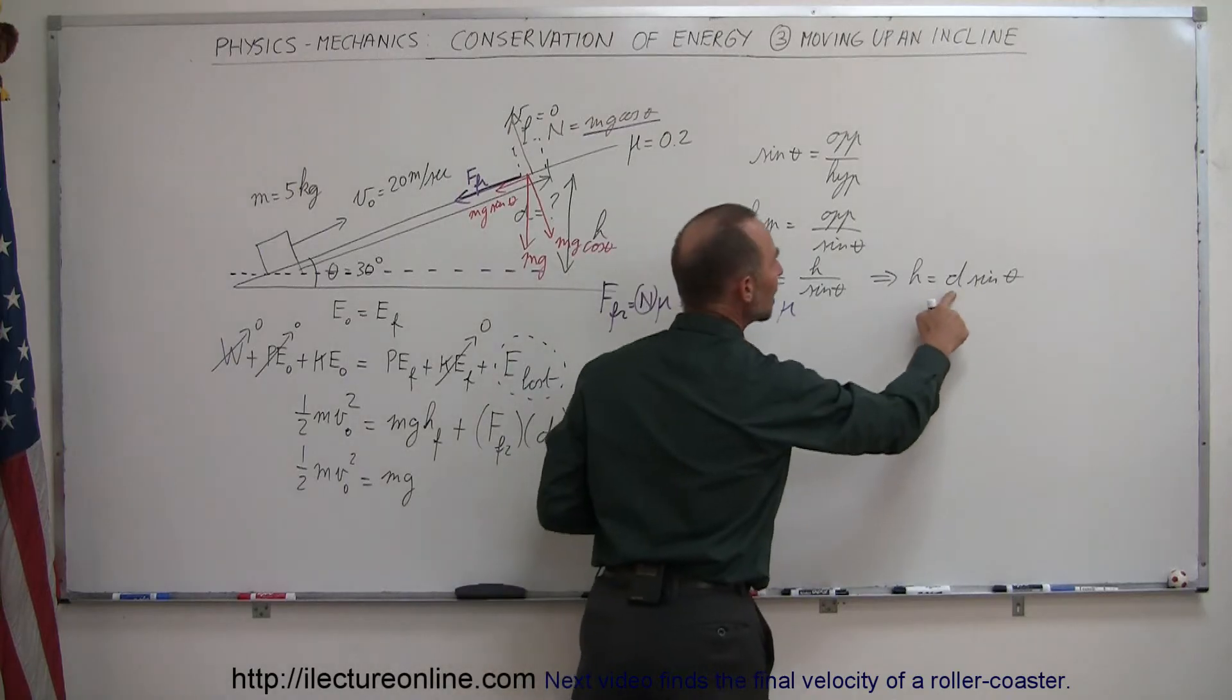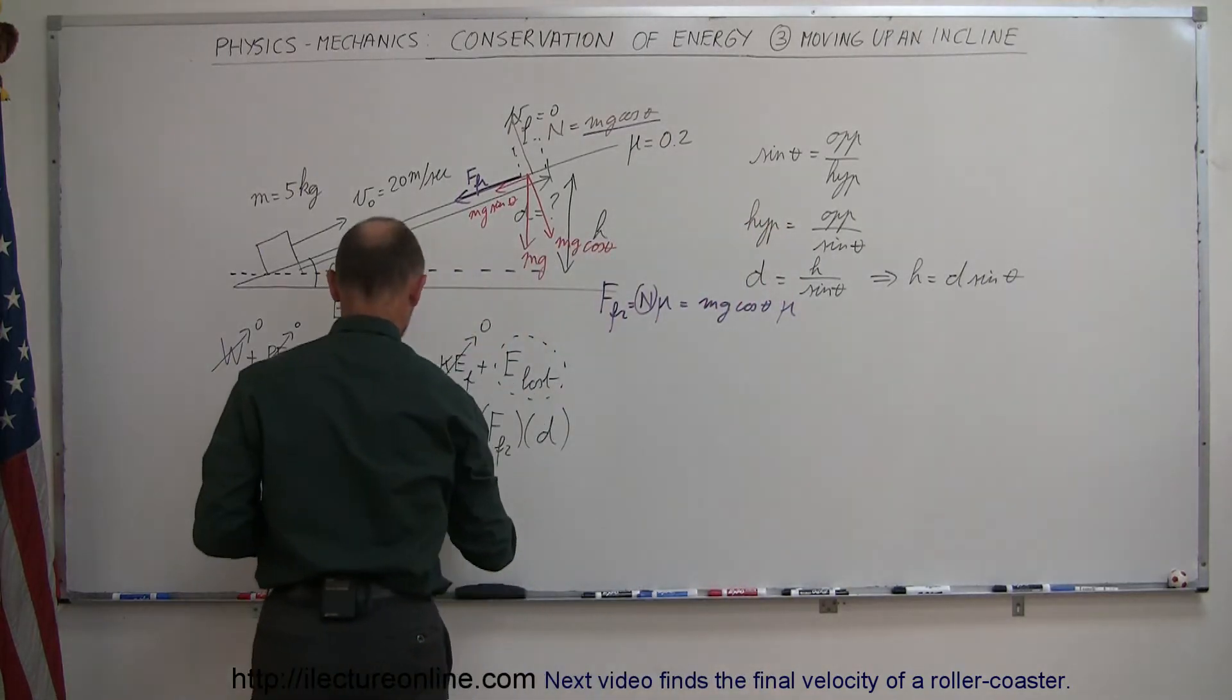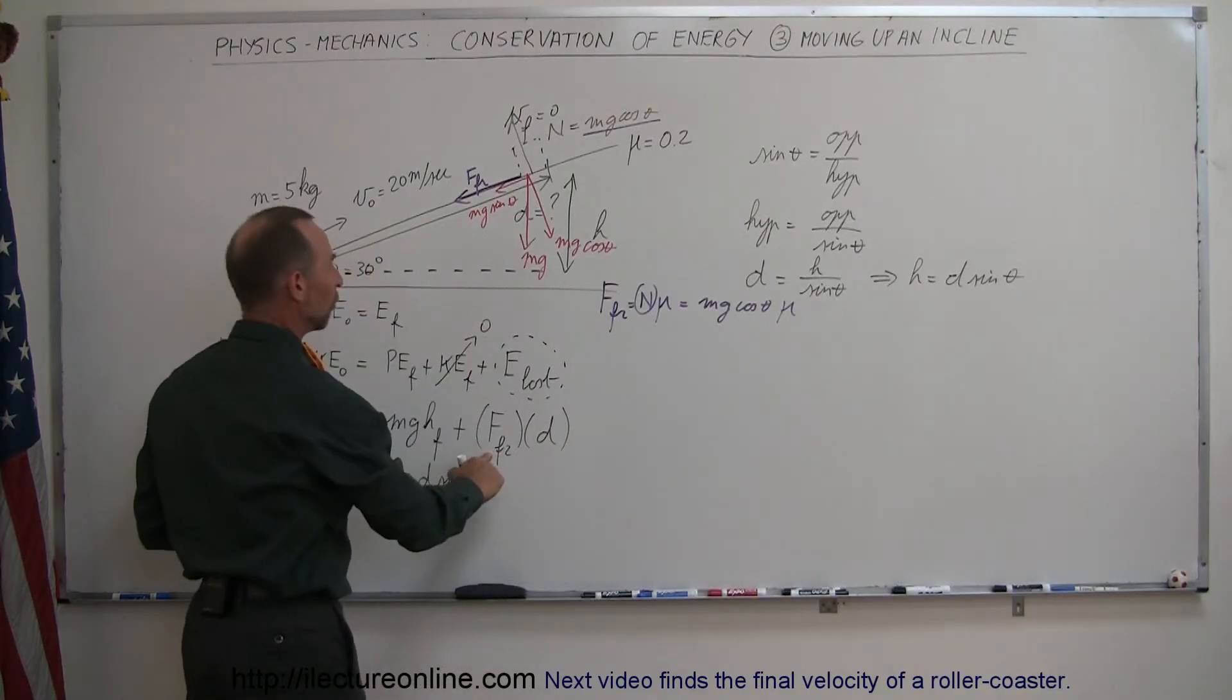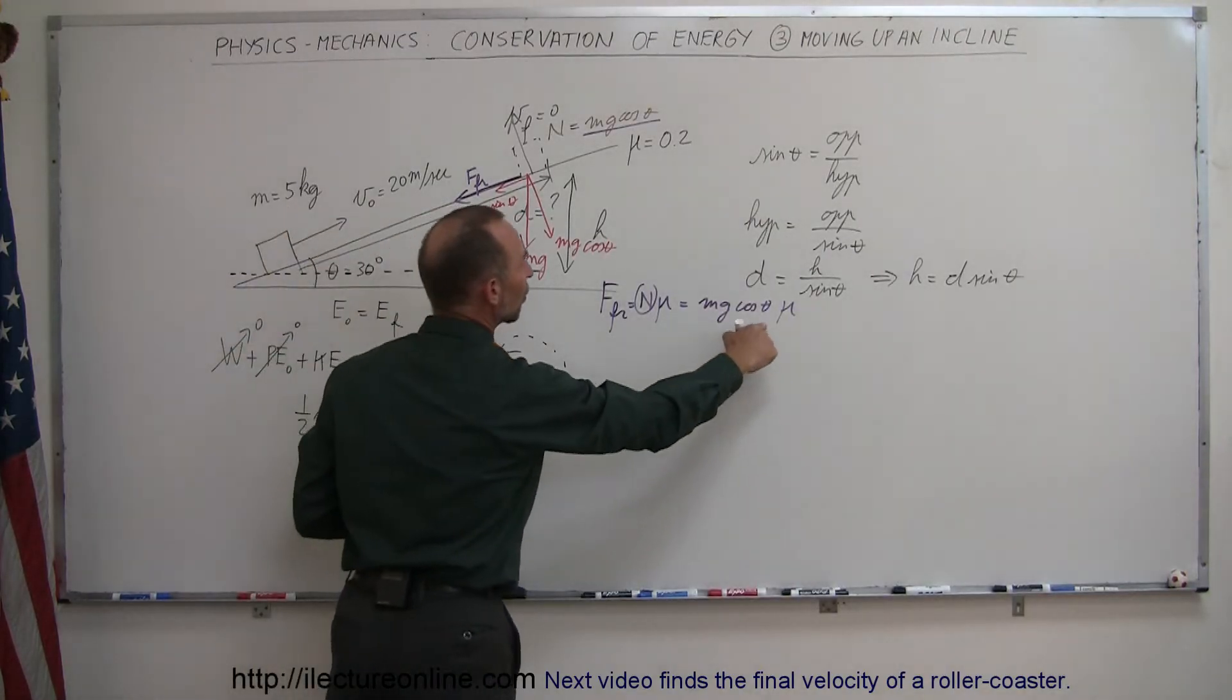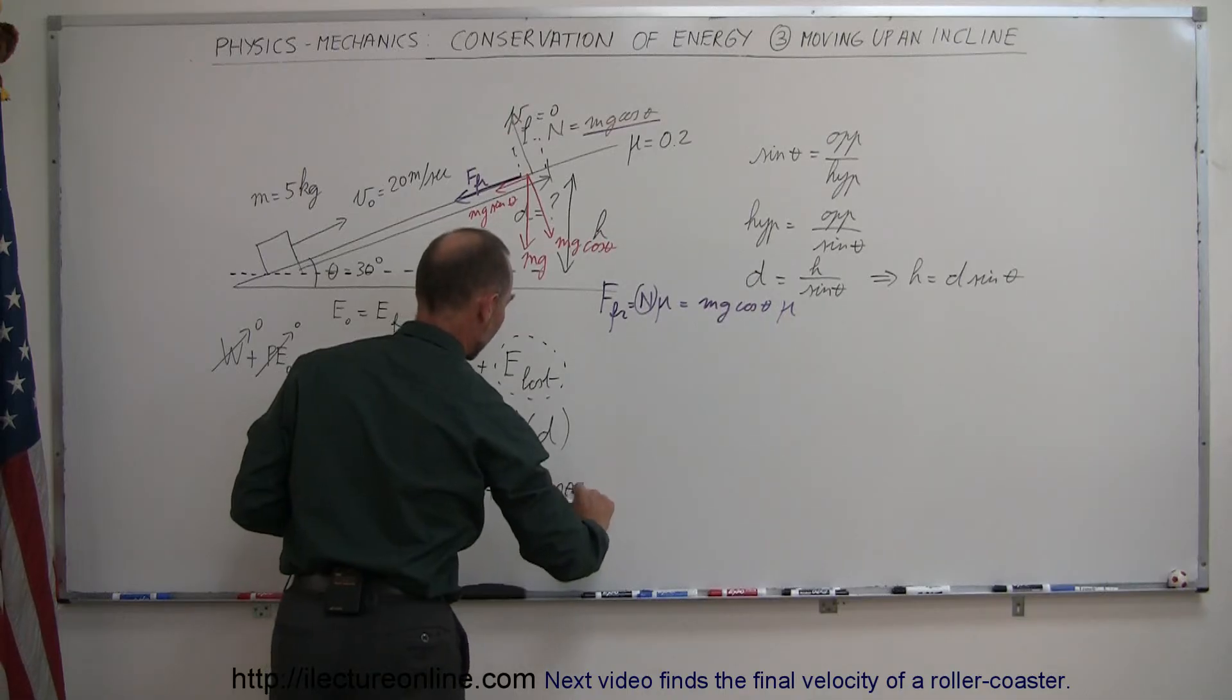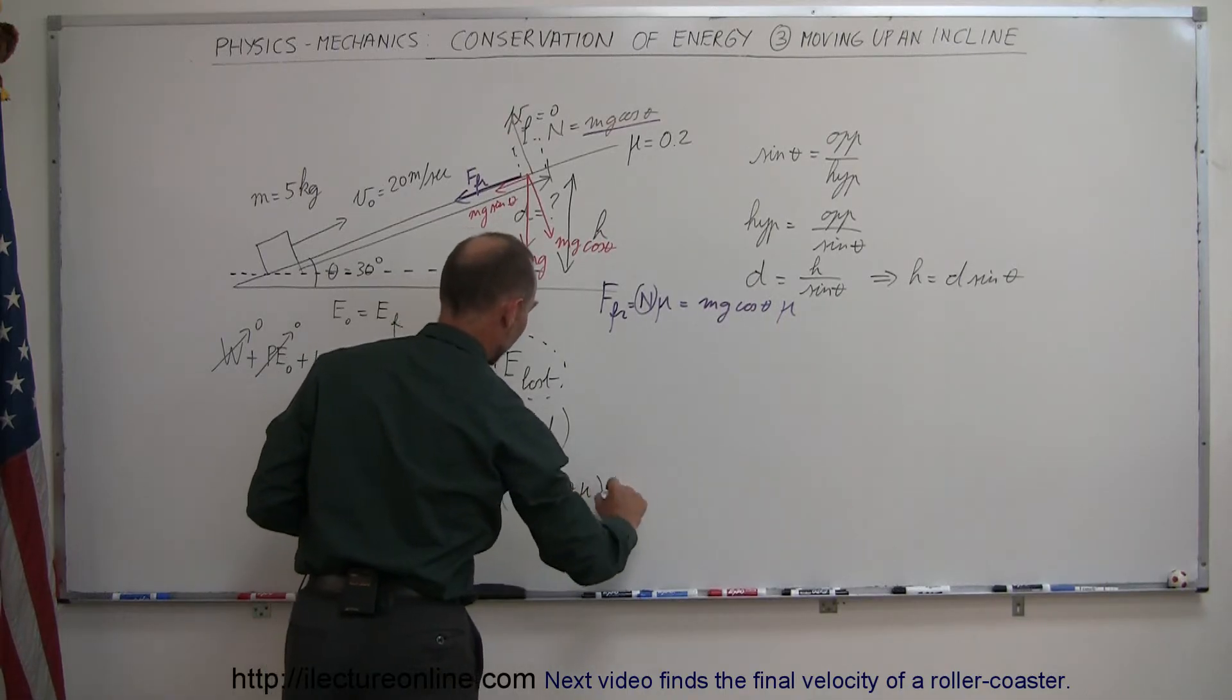So we'll write this as D sine theta plus the friction force, which is going to be mg cosine theta times mu, mg cosine theta times mu, and the whole thing multiplied times D.